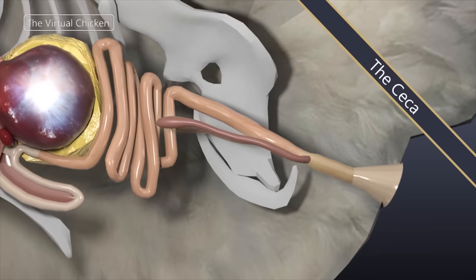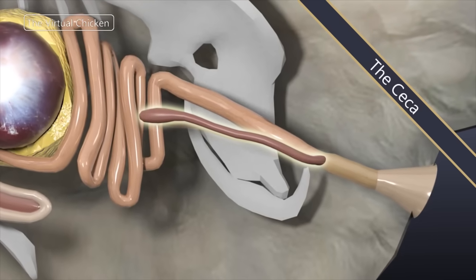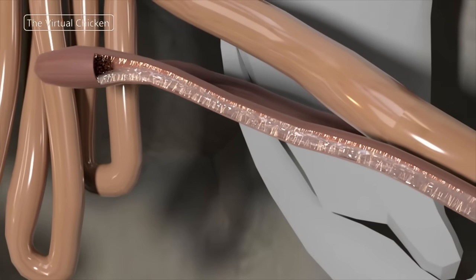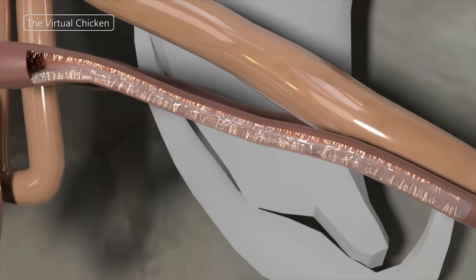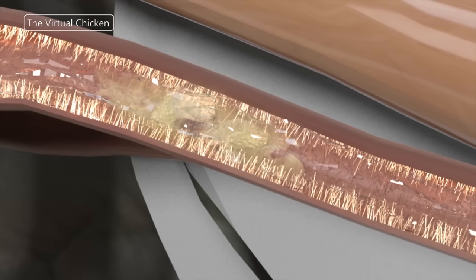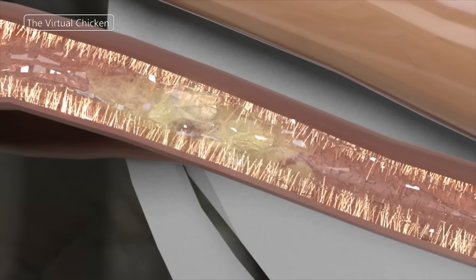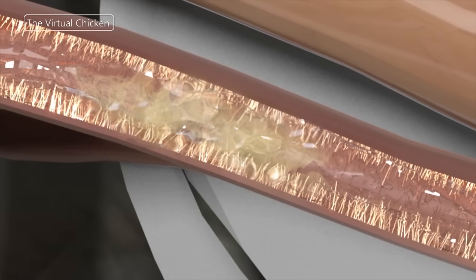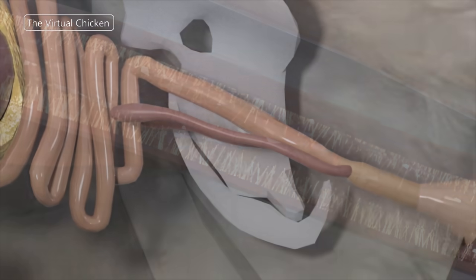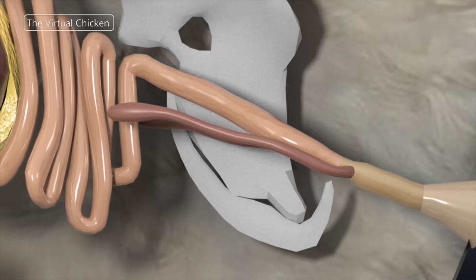The ceca are two blind pouches located where the small and large intestines join. Some of the water remaining in the digested material is reabsorbed here. Additionally, any remaining coarse materials are broken down in the ceca through fermentation. During this fermentation process, the bacteria in the ceca produce several fatty acids as well as the eight B vitamins.